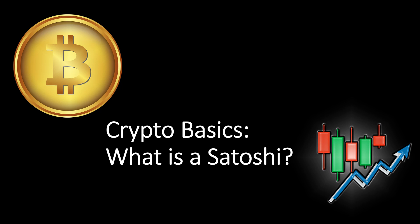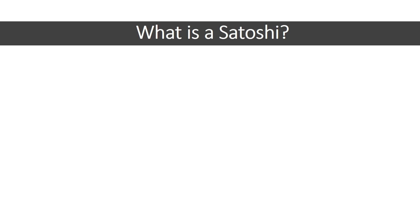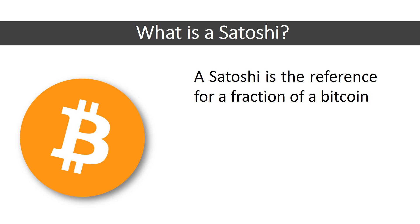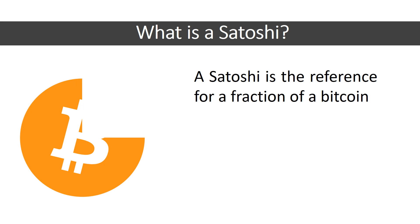So straight off the bat, what is a satoshi? A satoshi, or sat, is a reference for a fraction of a Bitcoin. Bitcoin, like any other currency — USD, GBP, euro — can be denominated in a smaller value, and a satoshi is simply the name for the Bitcoin equivalent.